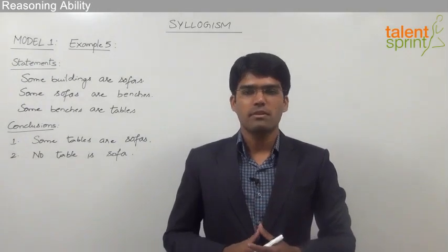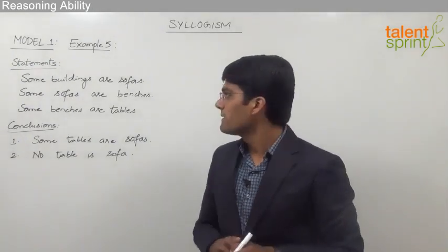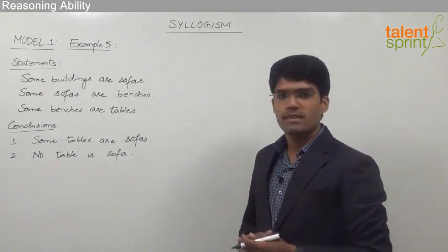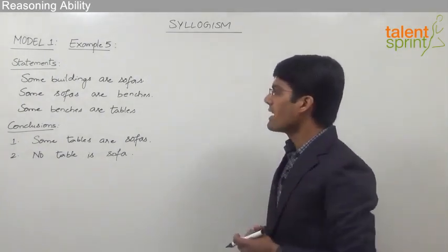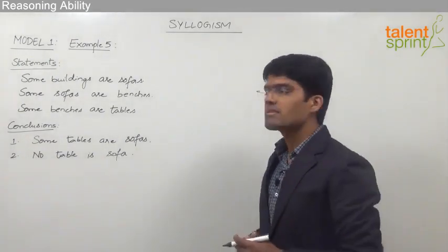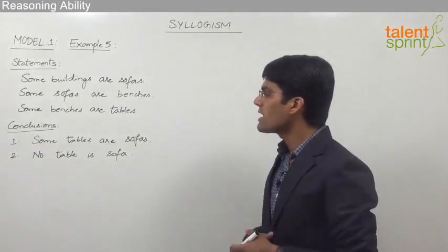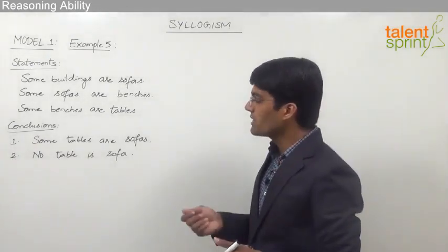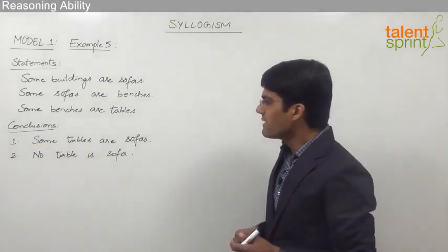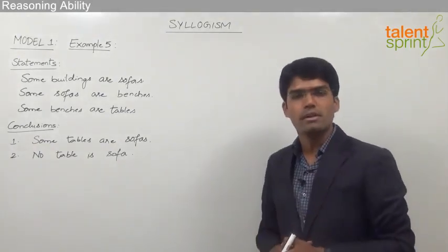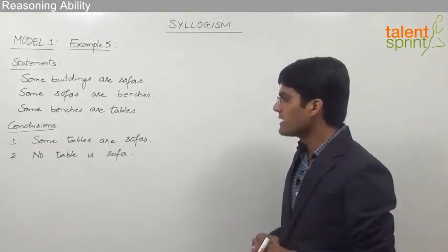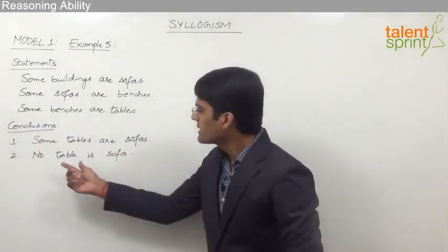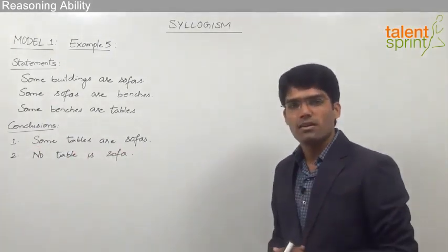Let us take another example from model 5 where the given statements are: some buildings are sofas, some sofas are benches, and some benches are tables. The conclusions are: some tables are sofas, and no table is sofas.